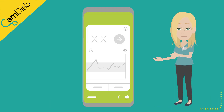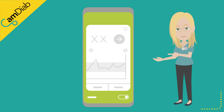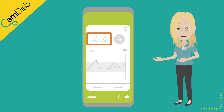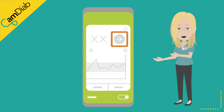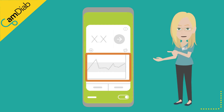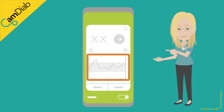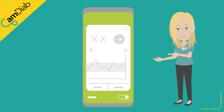This is the MyLifeCam APS-FX app's home screen. On the home screen, you can see the current sensor glucose reading, the glucose trend arrows, and a graph of the recent glucose data.